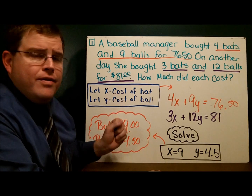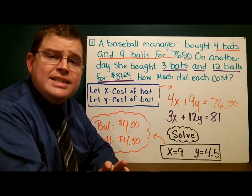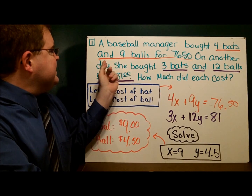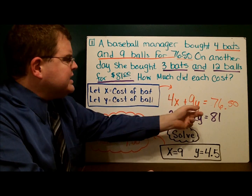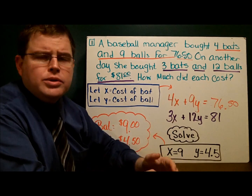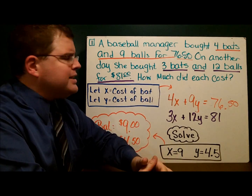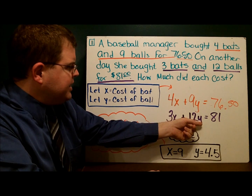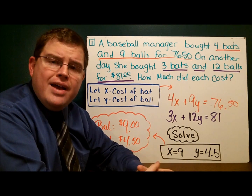Once I have my variables defined, I'll pull the information from the problem. The manager bought 4 bats and 9 balls for $76.50. So 4x plus 9y equals $76.50. On the second purchase, she got 3 bats and 12 balls for $81 — so 3x plus 12y equals $81. Now I have a system of equations: two variables, two equations. I can use any method I'd like to solve that.